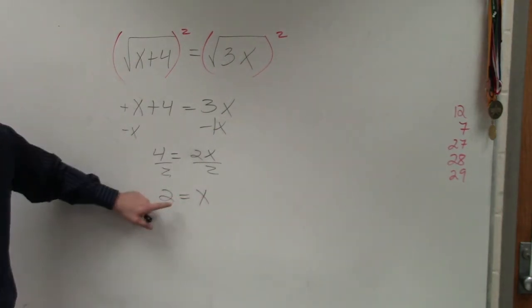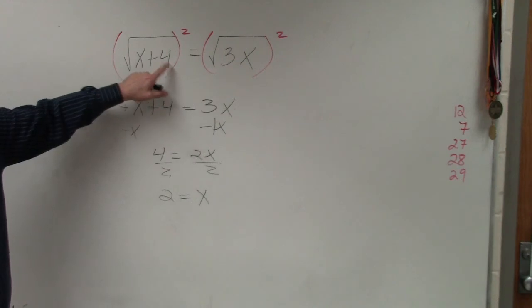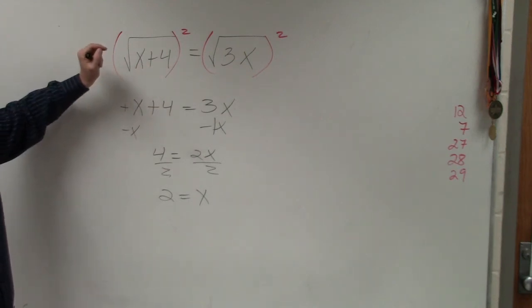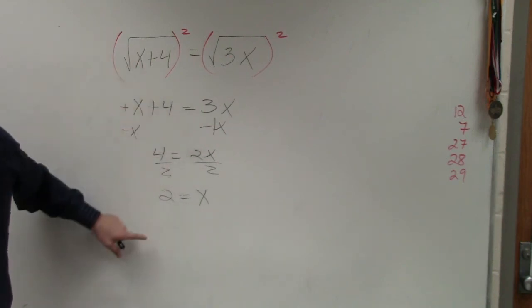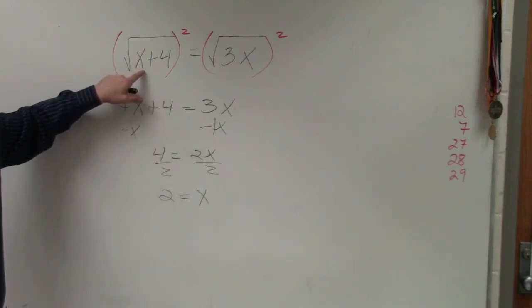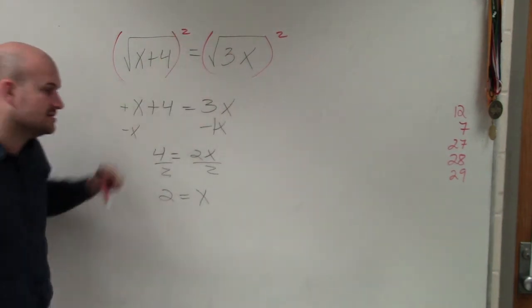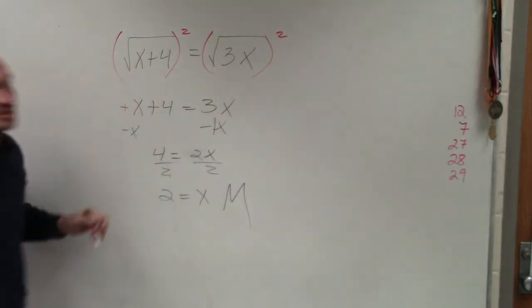The last thing I want to go over, Jennifer, is you take your answer and plug it back in. Did I do the math right? Yeah, so you plug this in. 2 plus 4 is 6. The square root of 6 is the square root of 6. 3 times 2 is 6, the square root of 6. Done. The answer works, correct. You're going to need to check your answer.